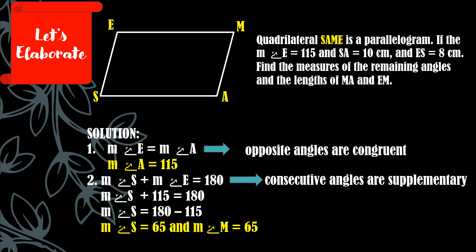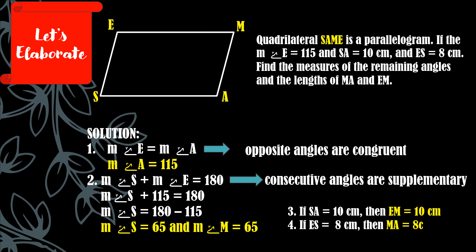For the side lengths: since opposite sides of a parallelogram are always congruent, if SA equals 10 cm, then segment EM equals 10 cm. If segment ES equals 8 cm, then segment MA equals 8 cm.